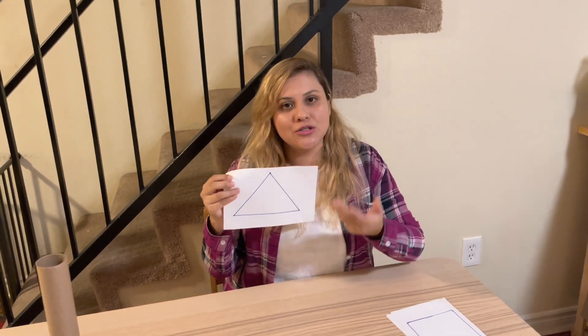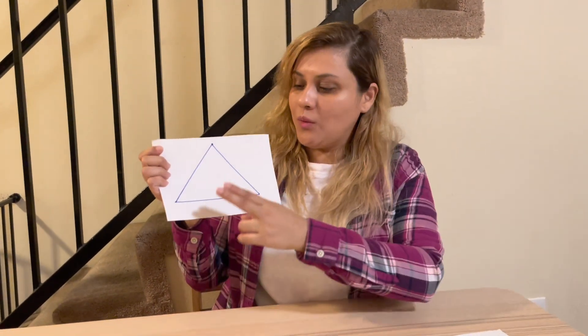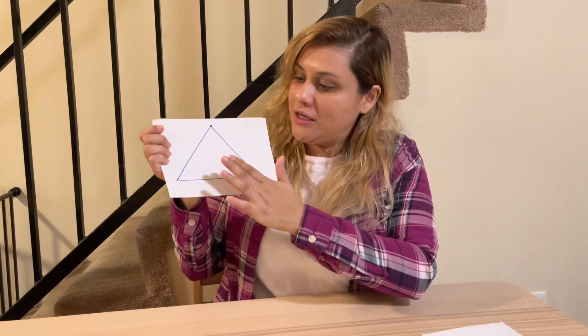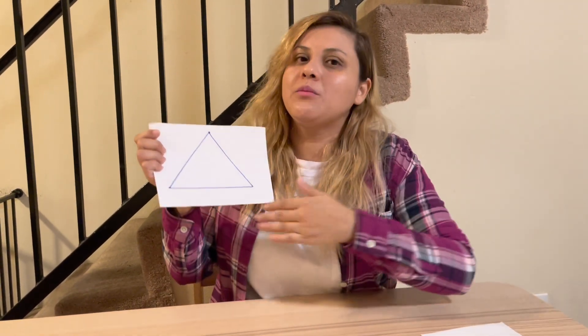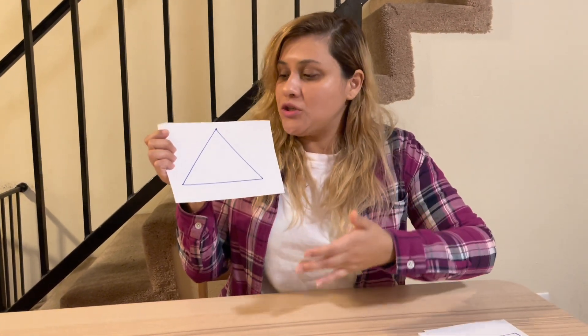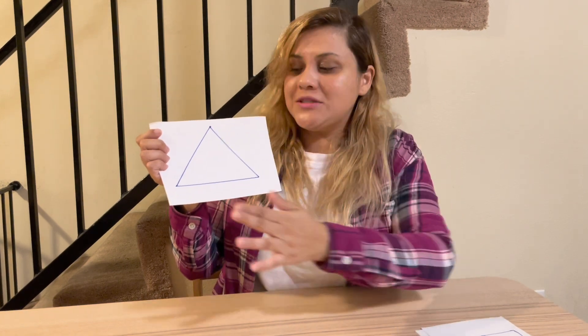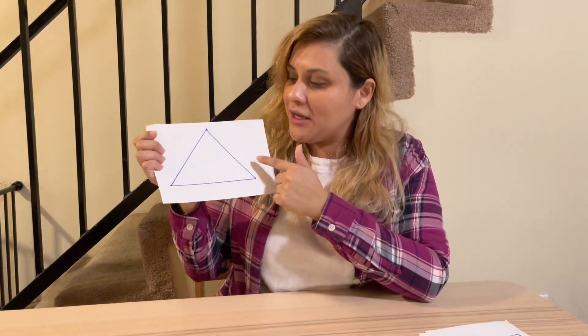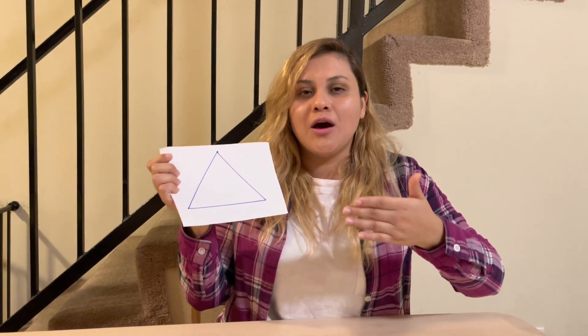The first thing we are going to do is introduce the shape to your student. Show them the visual of the triangle and ask, 'Do you know what shape this is?' Pause and give them a few seconds to answer. If they don't know, prompt them by saying, 'This is a triangle. Can you say triangle?' Again, pause and give your student enough time to answer.